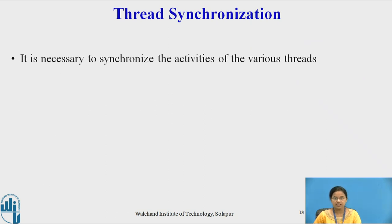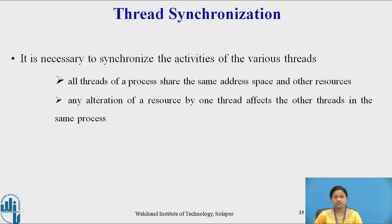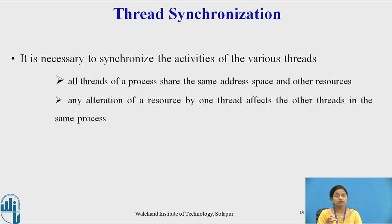Thread synchronization is necessary because all threads of a process share the same address space and other resources. Any alteration of a resource by one thread affects the other threads in the same process. For example, if two different threads want to add an element to a doubly linked list at the same time, there may be loss of an element and the list may become malformed. Such situations must be avoided, so there must be proper synchronization between threads.